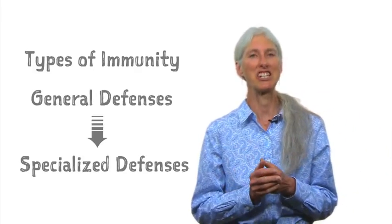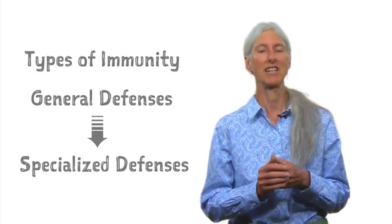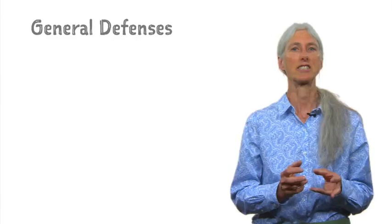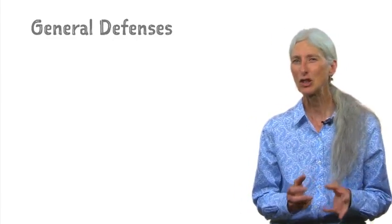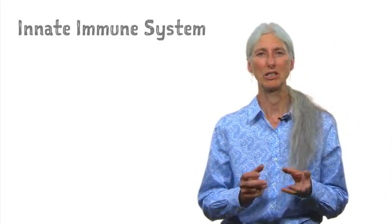For example, a specific genetic type of influenza virus. The general defenses are the first line of defense and are collectively termed the innate immune system.